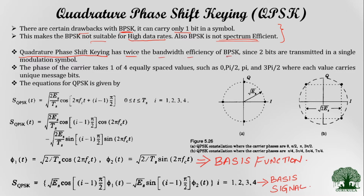Quadrature Phase Shift Keying has twice the bandwidth efficiency of BPSK. This is achieved because in QPSK we send two bits in a single transmitted modulation symbol. We have four equally spaced phase values: 0, π/2, π, and 3π/2. Each symbol carries two bits of information — for example, 00, 01, 11, and 10. Looking at the constellation diagram, it is clear that QPSK has four waveforms, all equally spaced in phase, while frequency and amplitude remain the same.